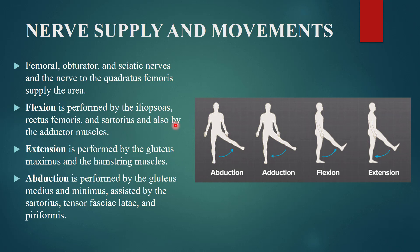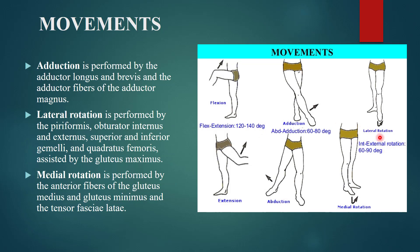Abduction — lifting the thigh away from the other leg — is performed by gluteus medius and gluteus minimus, assisted by sartorius, tensor fasciae latae, and piriformis. Adduction — bringing the thigh back toward the other leg — is performed by adductor longus, adductor brevis, and the adductor fibers of adductor magnus.